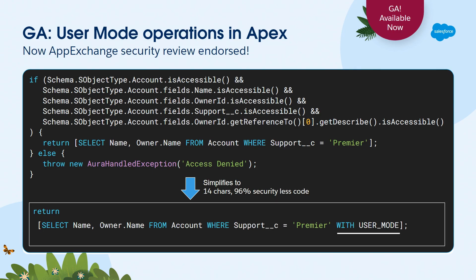User mode is available for DML, SOQL, SOSL, every database operation - as a keyword, as a method, every permutation. Everywhere you touch the database, you can use user mode to have Apex leave system mode, de-escalate down to the true user permissions for that database operation, and then return back to system mode in the Apex runtime afterwards. You can mix and match user mode and system mode in the same context, even in adjacent lines of code.